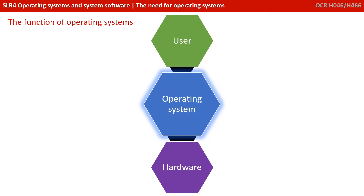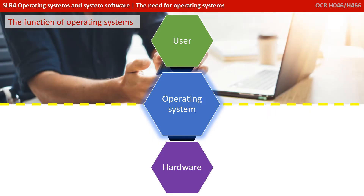All computer systems input data, process that data, and output a result. Quite often this process involves a user who provides that data, and the output is produced by some hardware, whether that's a display or a printer. So the user needs a way of interacting with that hardware, and that's the purpose of an operating system — it provides the interface between the user and the hardware.